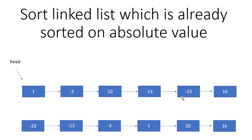One simple approach is to use merge sort, giving O(n log n) complexity. But since the list is already sorted on absolute values, we can use that property to improve the complexity from O(n log n) to O(n) — a better solution.